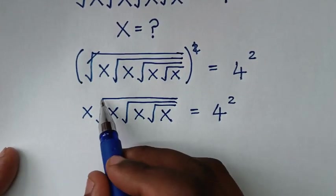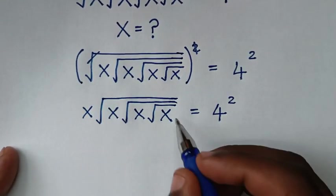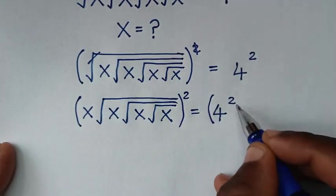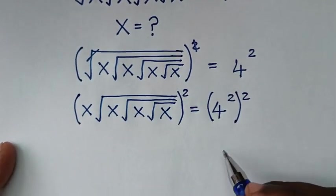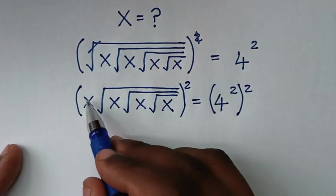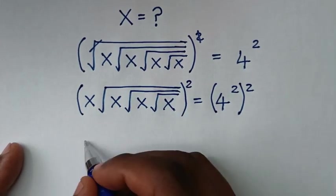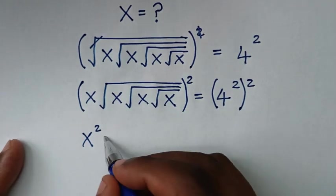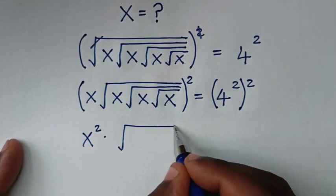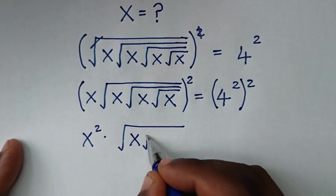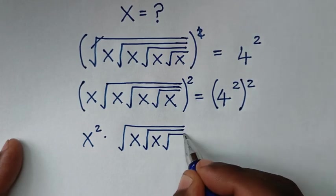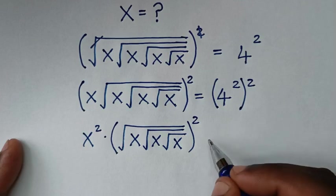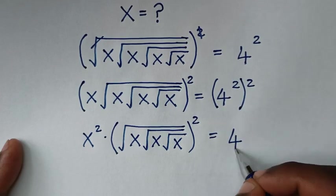In the next step, we'll remove this square root here, so we'll square again on both sides. We'll take this square inside, so it will be x squared. Then, times square root of x under square root of x, bracket squared, is equal to 4.